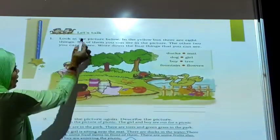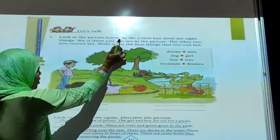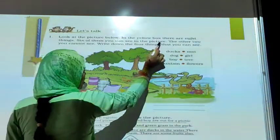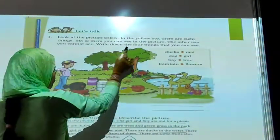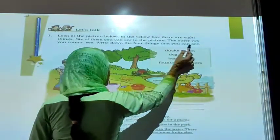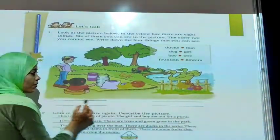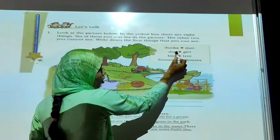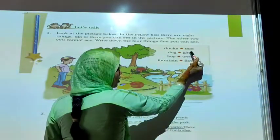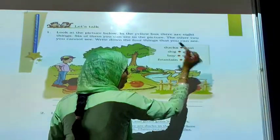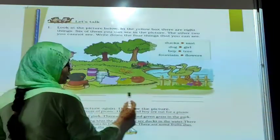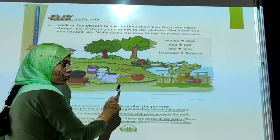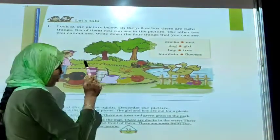Next exercise: Let's Talk. Number 1: Look at the picture below. In the yellow box, there are 8 things. 6 of them you can see in the picture; the other 2 you cannot see. Write down the things you can see. Students, you can see this picture. One box is given with 8 words: ducks, dog, boy, fountain, maid, girl, trees, and flowers. All these things are in the picture, but 2 things are missing. I am leaving you this as homework — find out which 2 things you cannot see.